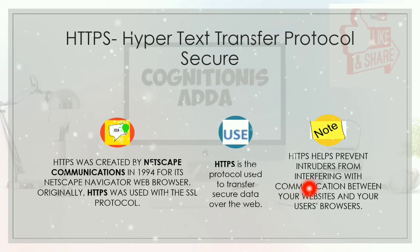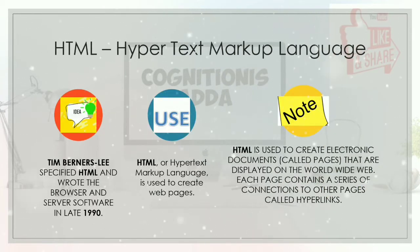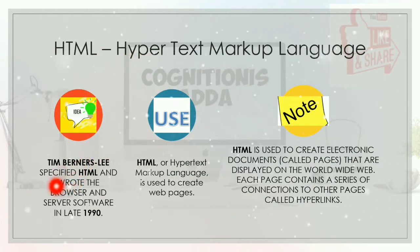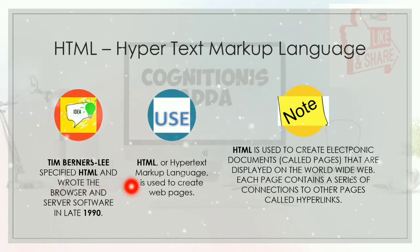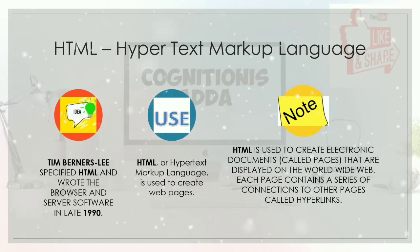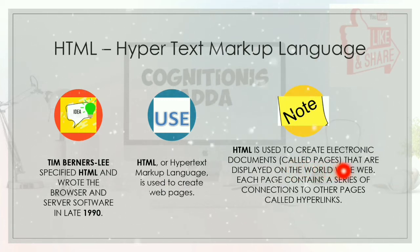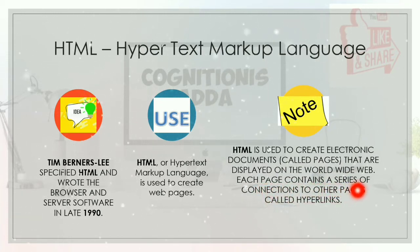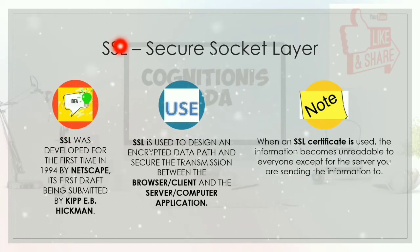The fourth topic is HTML — Hypertext Markup Language. Tim Berners-Lee specified HTML and wrote the browser and server software in the late 1990s. HTML is used to create web pages and electronic documents called pages that are displayed on the World Wide Web. Each page contains a series of connections to other pages called hyperlinks.